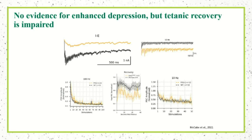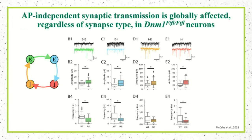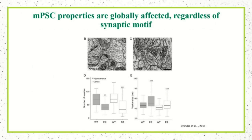When we looked at action-potential-independent release, we found no specific effect on inhibition — at every synapse type, miniature EPSCs showed a bigger amplitude but lower frequency. This made sense based on electron microscopy work in both the FITFUL mice and Dynamin-1 knockout mice: synaptic vesicles are fewer but bigger. A bigger vesicle contains more neurotransmitter, so each fusion event produces a larger response, but overall there are fewer vesicles available.